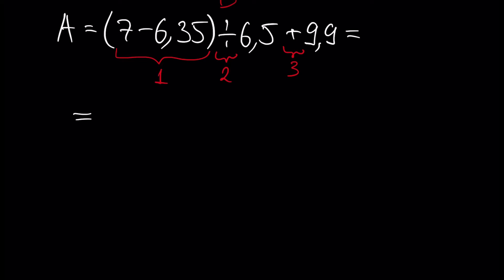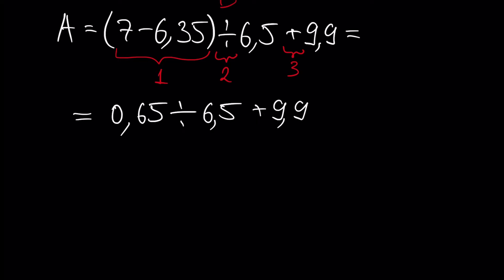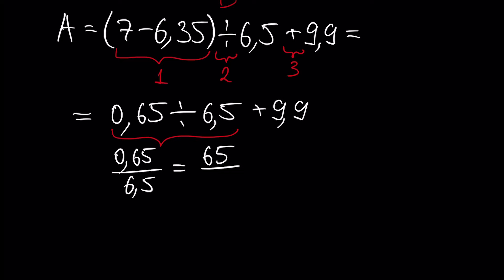We have 0.65 divided by 6.5. This part can be represented as a fraction. We know that if we multiply both the numerator and denominator of the fraction by the same number, the answer will be the same — it doesn't change. So we multiply both numerator and denominator by 100. It will be 65 divided by 650. And if we divide both sides by 65, it will be 1 over 10.